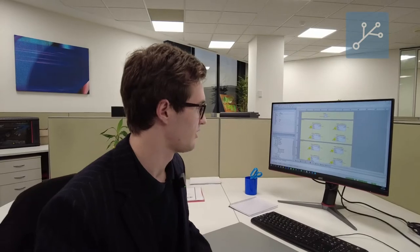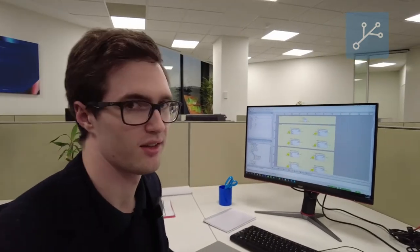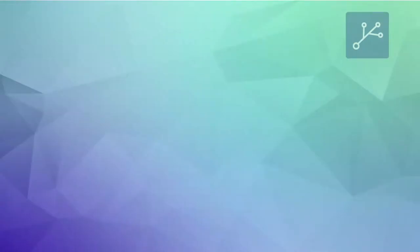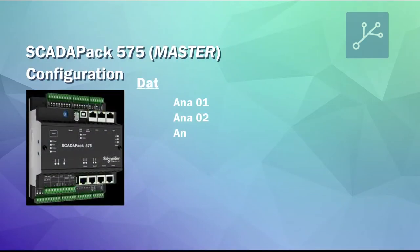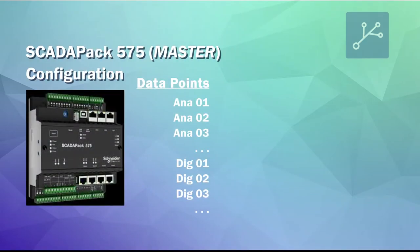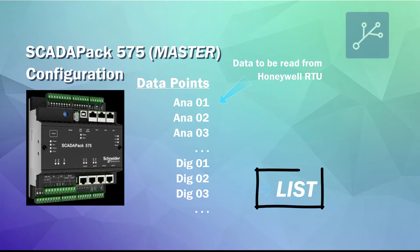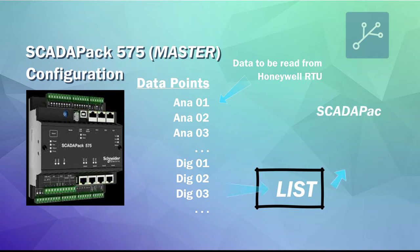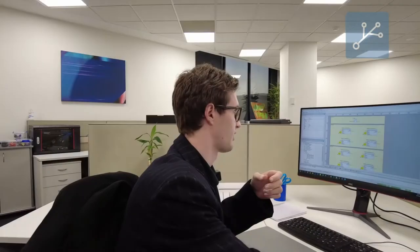So how DNP3 peer communication works: we have the master — the SCADA Pack — define all the different points and values of what needs to be read from the Honeywell RTU. All these points are read into a list, it doesn't matter if it's analog or binary; it's all read into the same list which is then executed by a separate function block. I can demonstrate that here.